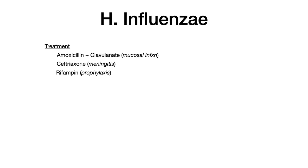Treatment for H. influenzae depends on the type of infection. For mucosal infections, the treatment is amoxicillin plus clavulanate. If the patient has meningitis, you add ceftriaxone. And for close contacts, you need to give prophylactic rifampin. So there are three answers: amoxicillin-clavulanate for mucosal infections, ceftriaxone for meningitis, and rifampin for close contacts.